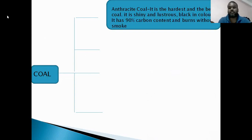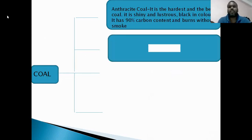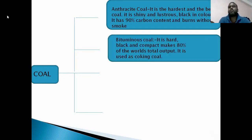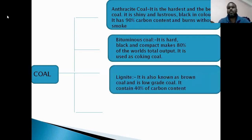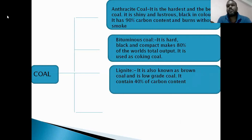Anthracite has 90% carbon content and burns without any smoke, leaving behind very little ash after burning. Number two: Bituminous coal. It is hard, black, and compact, making up the majority of the world's total output. It is used as coking coal. Number three: Lignite. It is also known as brown coal as it looks brown in color. It is low-grade coal and contains only 40% carbon.